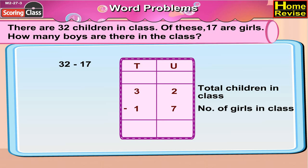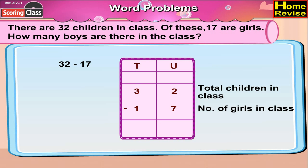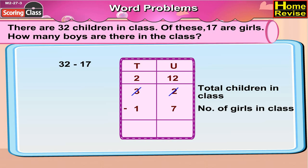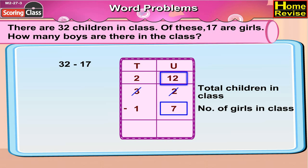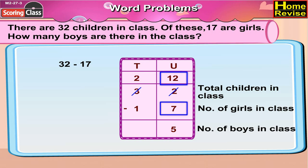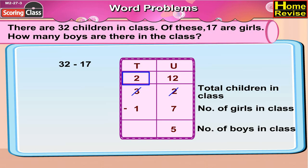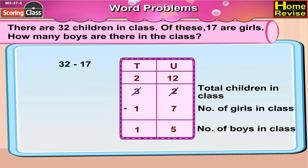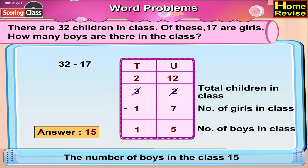7 cannot be subtracted from 2, so we untie 1 ten from 3 tens. Now 3 tens 2 units becomes 2 tens 12 units. 12 minus 7 is 5. 2 minus 1 is 1. So the number of boys in the class is 15.